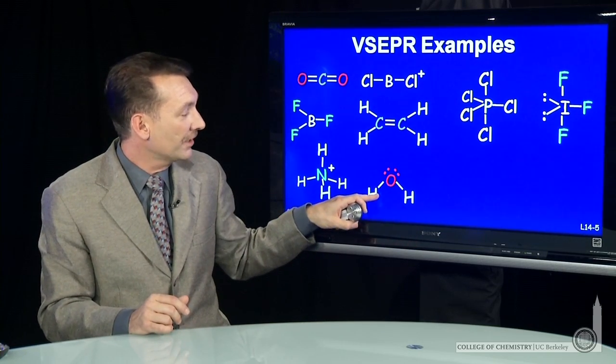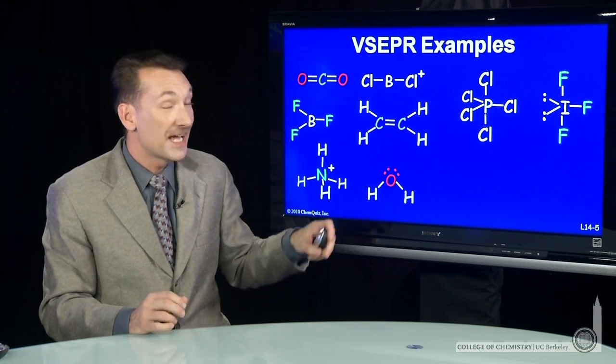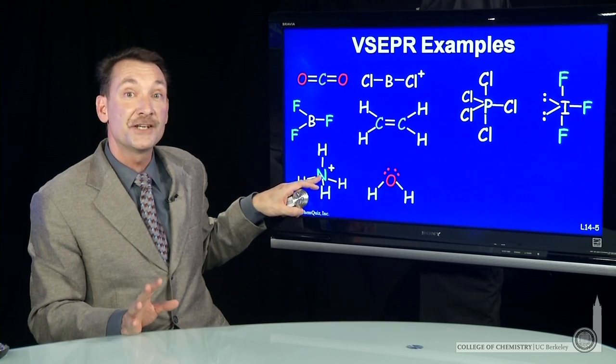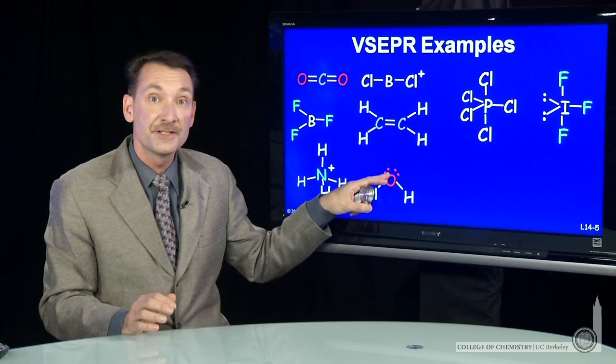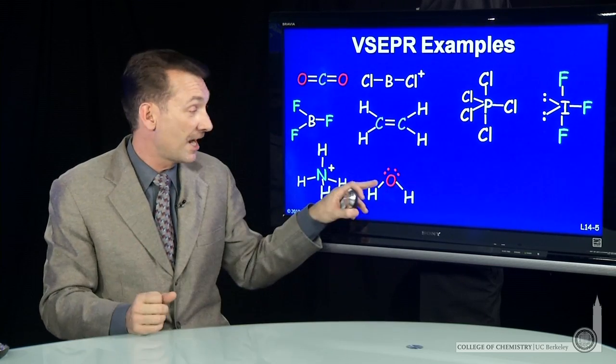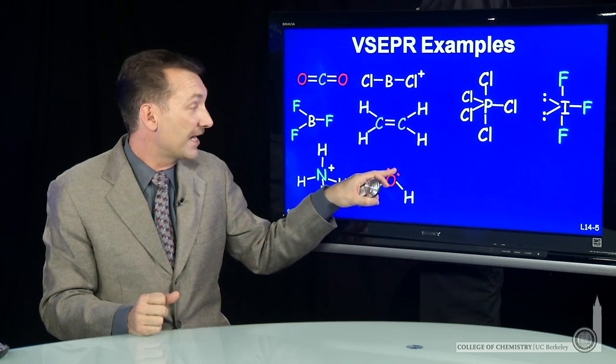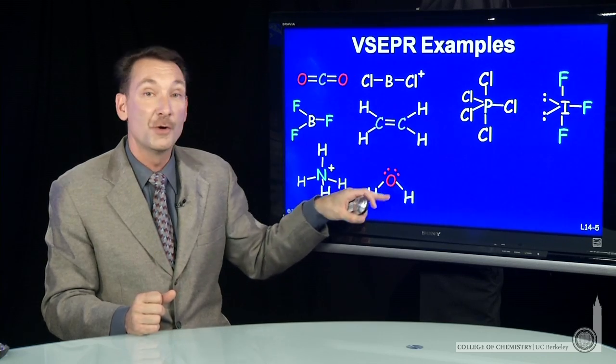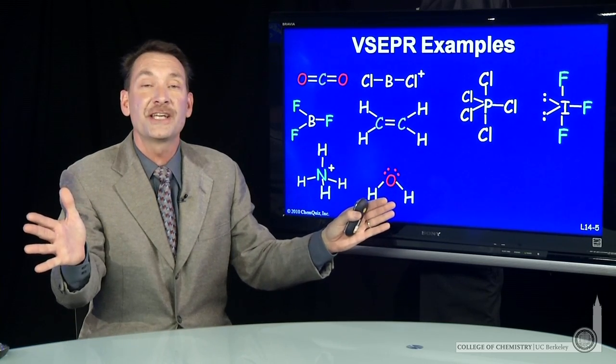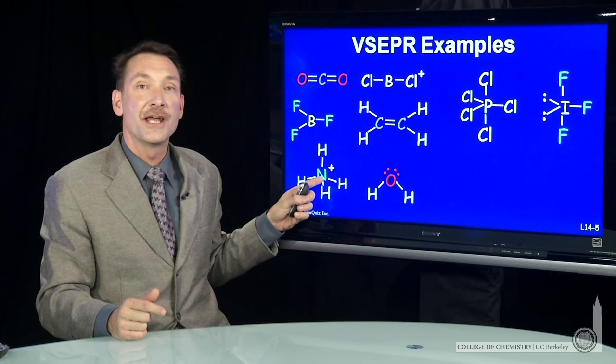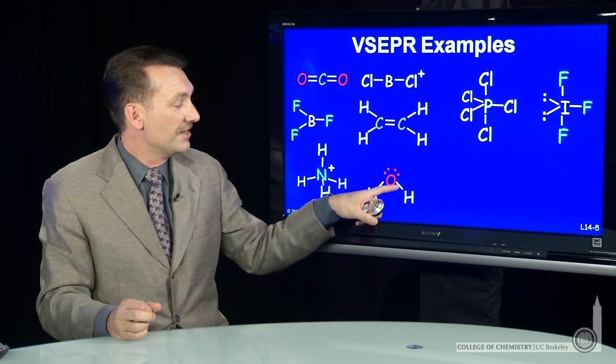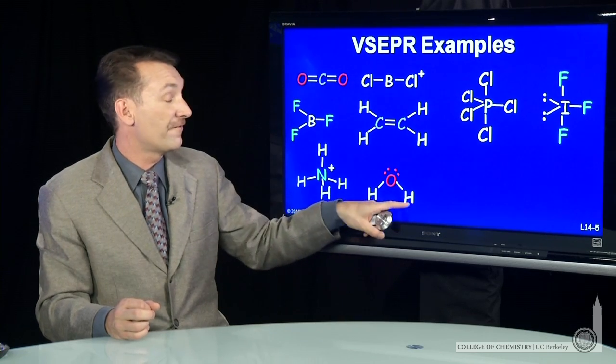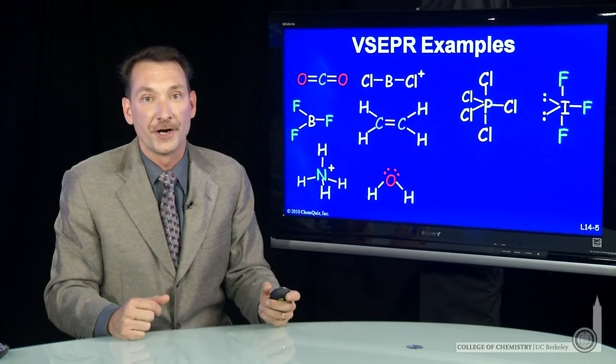Now, this bent molecule, this bond angle is actually a little less than the 109.5 of true tetrahedral. That's because these lone pairs can be held very closely to the oxygen and they can have a greater steric interaction with these two hydrogens, squishing those hydrogens a little closer together than the 109.5. In fact, this bond angle is closer to 105 degrees. 104.5 is usually the bond angle reported for water.